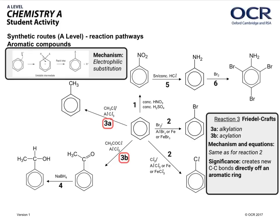Reaction 3 in the aromatic section — these are called Friedel-Crafts reactions. The mechanism and equations are the same as for reaction 2, except you have to make sure you've got the correct electrophile. It's important to double-check that you understand where the positioning of the positive charge should be. In some mark schemes they'll allow you to put it anywhere, but considering the carbon is the atom that carries the positive charge when it does the bonding, it's good practice to put it next to the carbon atom.